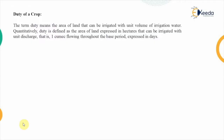The parameters between which we are going to establish a relationship are the duty of a crop, delta of a crop, and the base period of the crop. Looking at the definitions, the most important one is regarding the duty of a crop. Duty means the area of land that can be irrigated with the unit volume of irrigation water.